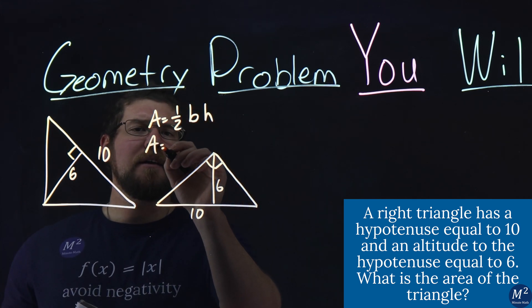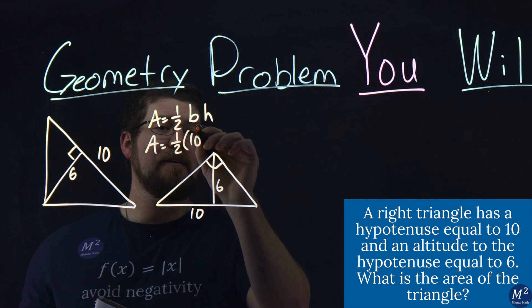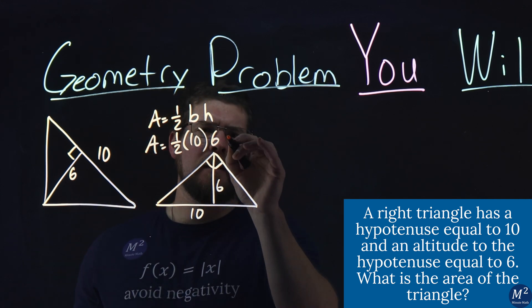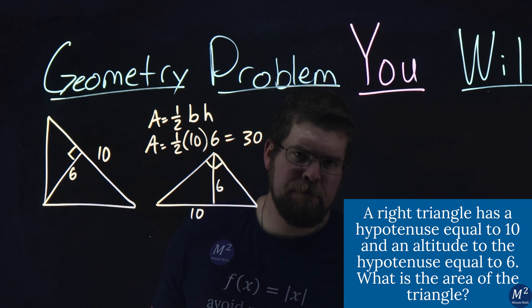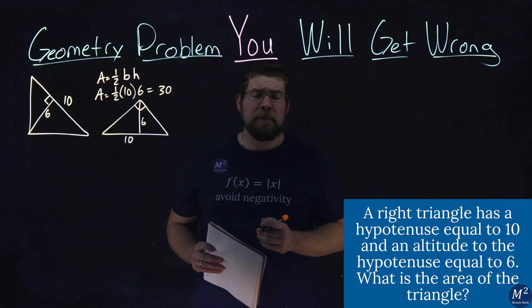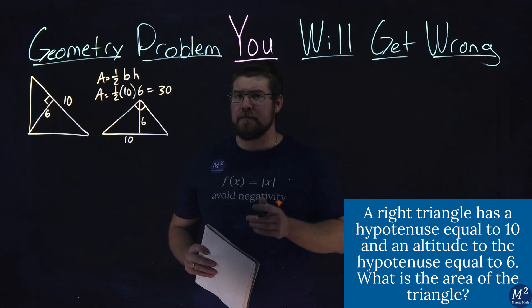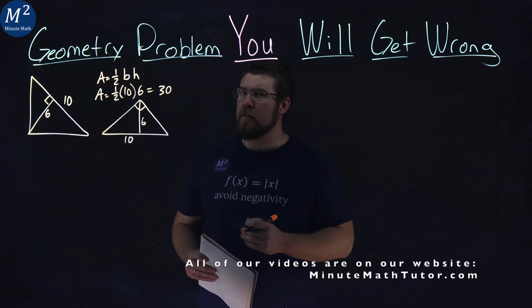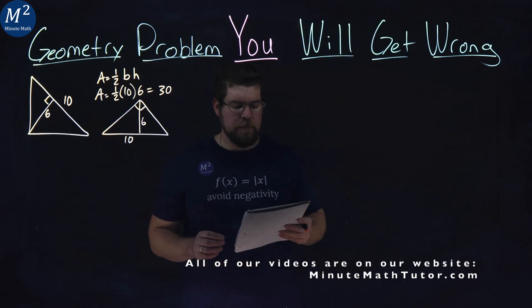Area of this triangle is equal to one-half, base is 10, height is 6. And that comes out to be 30. Was that the answer that you got here? Well, if that was the case you got it wrong, 30 is not the area of the triangle.